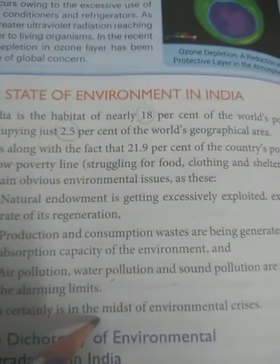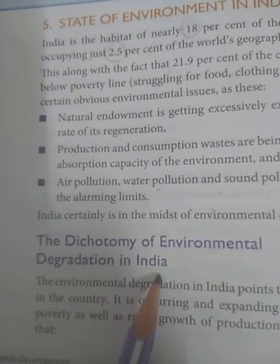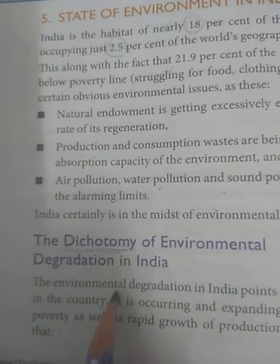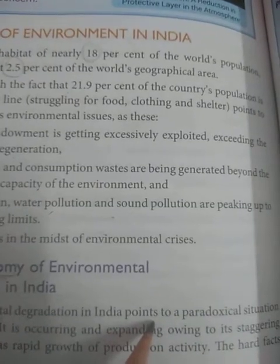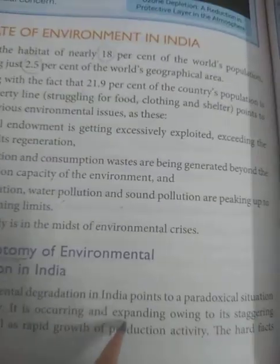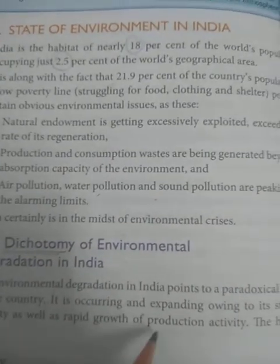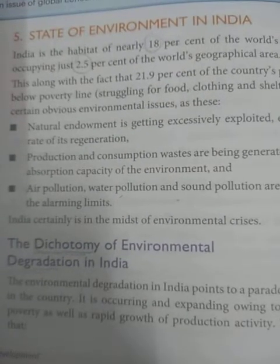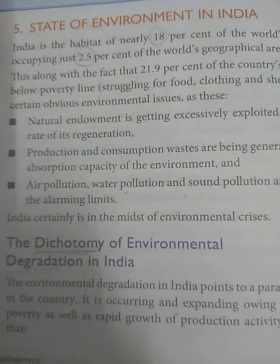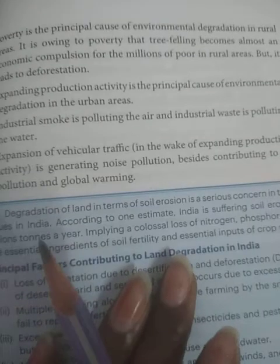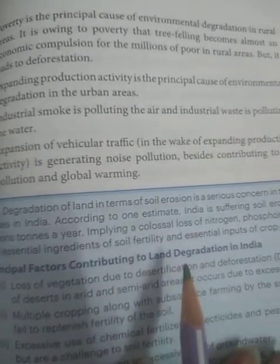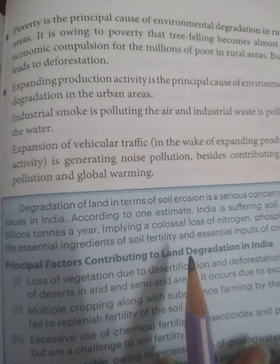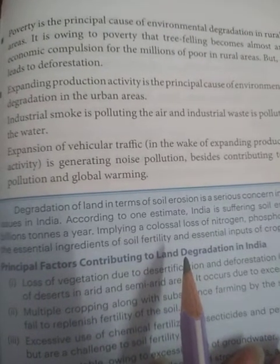India is certainly in the midst of an environmental crisis. The environmental degradation in India points to a paradoxical situation — it is occurring and expanding owing to staggering poverty as well as rapid growth of production activity. Poverty is the principal cause of environmental degradation in rural areas. It is owing to poverty that tree felling becomes almost an economic compulsion for millions of poor in rural areas, leading to deforestation.